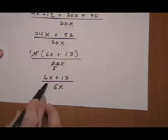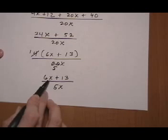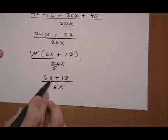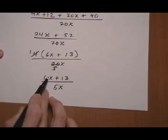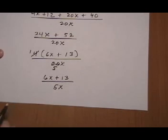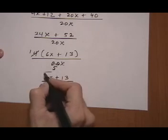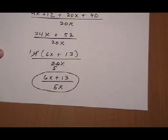So our final answer will be 6x plus 13 over 5x. And remember, we cannot cancel the x's here because one of them is not a factor on the top. It is a separate term because of the addition sign there. That means we're done with that one. And I think we have room for one more.